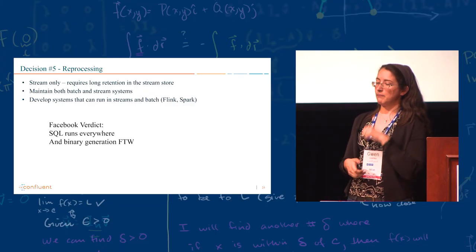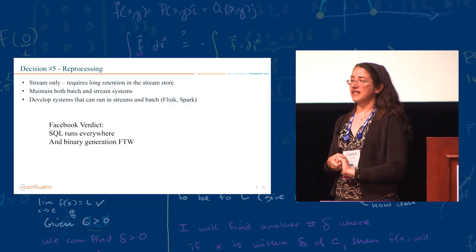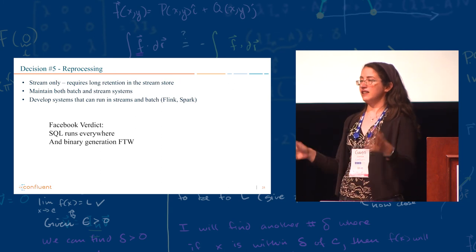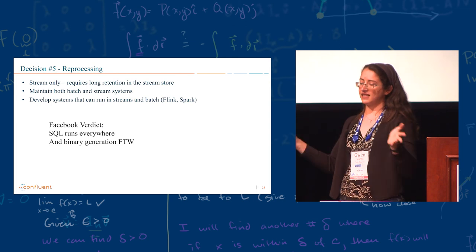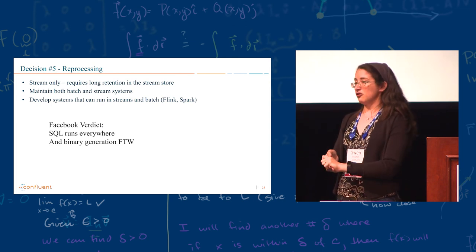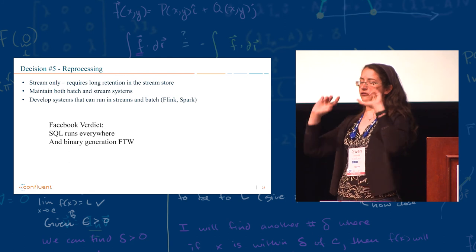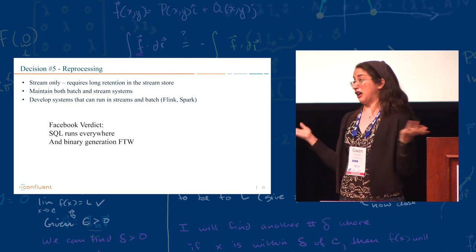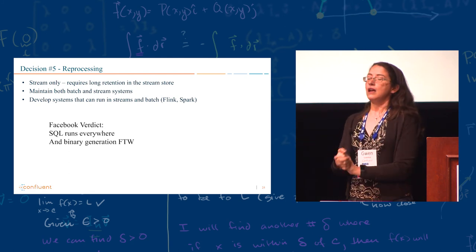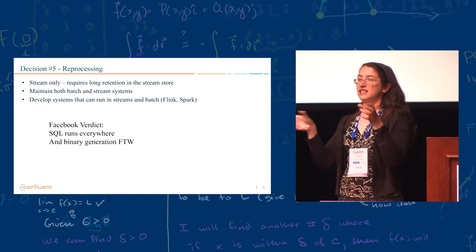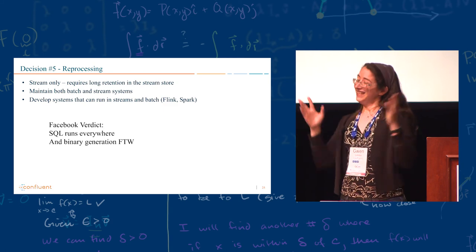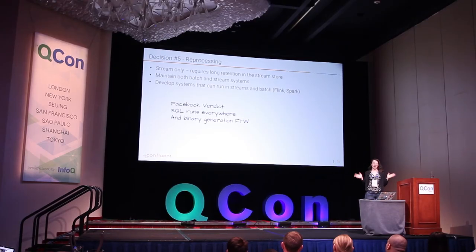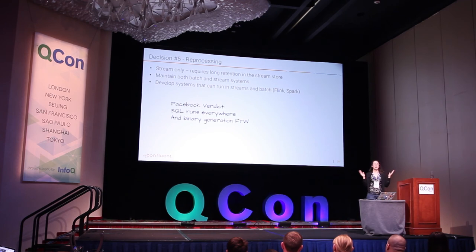They basically went with batch and streaming, but they said that, well, first of all, we have Puma. It's just SQL. SQL runs on everything, so we can run SQL streams, SQL in batch. That's easy. For Stylus, our C code, basically they have their own C compiler. Duh. It's Facebook. Why wouldn't they? And they basically, their compiler generates two binaries, one for streams and one for batches. That's pretty cool. Again, small tidbits in the papers that are like, why don't you write a paper without that part? That's the good part.